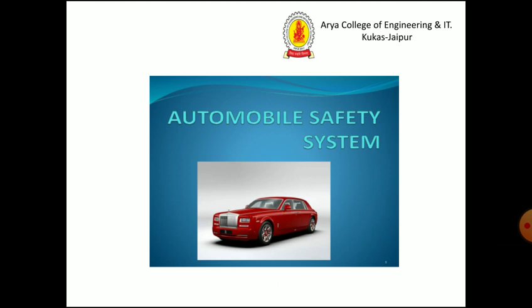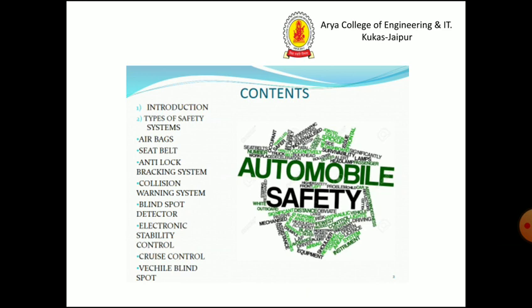Let's start with automobile safety systems. There are different types of safety systems like airbags, seatbelts, ABS, collision warning systems, transport detectors, electronics stability control, cruise control, and vehicle blind spot finder.